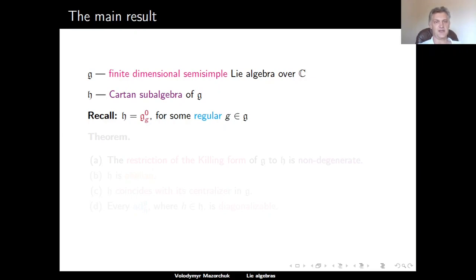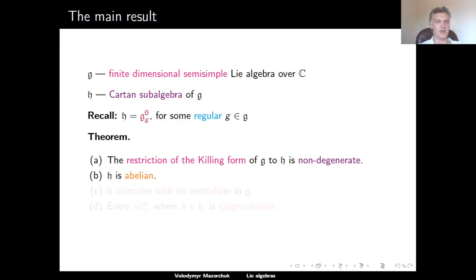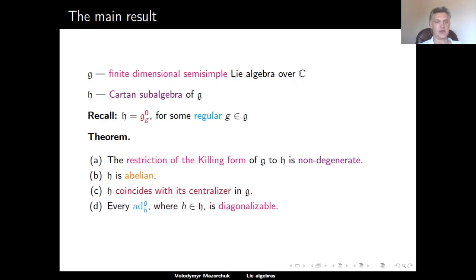The main result of today's lecture is the following theorem. Part A: the restriction of the killing form of G to the Cartan subalgebra H is non-degenerate. Part B: the Cartan subalgebra H is abelian. Part C: the Cartan subalgebra H coincides with its centralizer in G. And finally, Part D: the adjoint operator in G associated to any element H in H is diagonalizable.